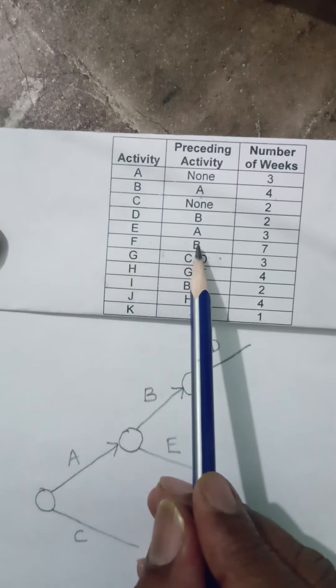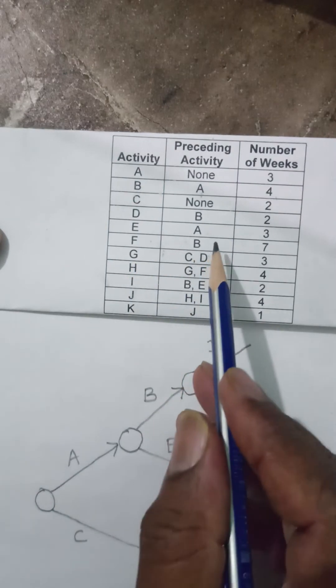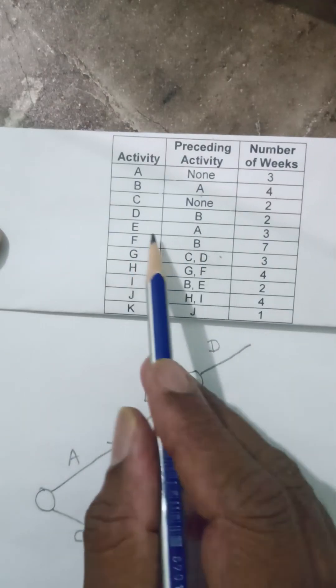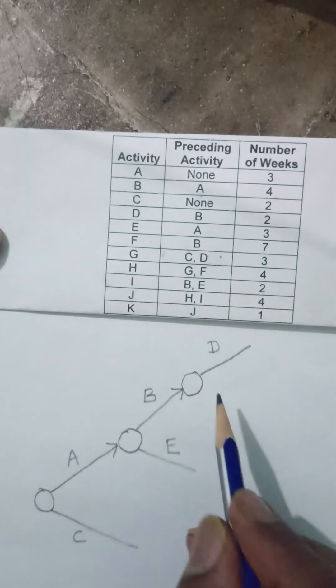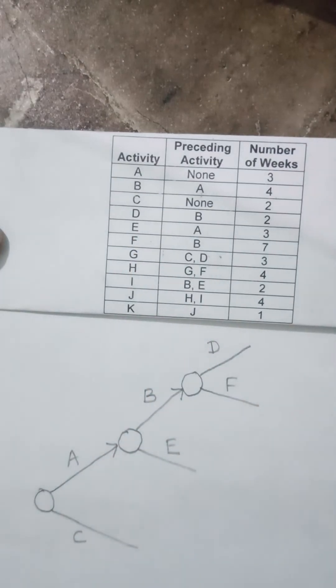F is starting after B. My B is there. B is giving rise to two activities, D and F. So I can write F here.